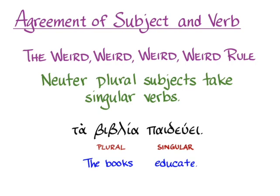Remember when you come across the weird weird weird rule that it's how Greek does it, not how English does it. So you wouldn't translate 'ta biblia paidewe' as 'the books educates' — that would be like saying 'the girls dances,' which doesn't sound right in English. What you're always trying to do is express in English the same idea that Greek is conveying. The weird weird weird rule is simply that neuter plural subjects take singular verbs in Greek, and you'll have to express that as correct English, like 'the books educate.'